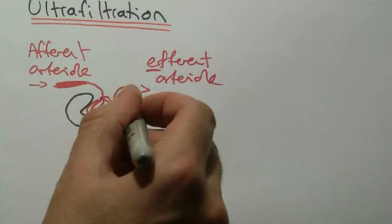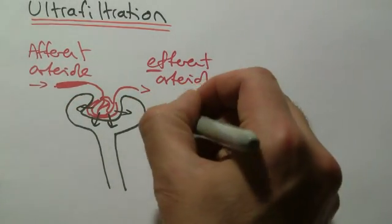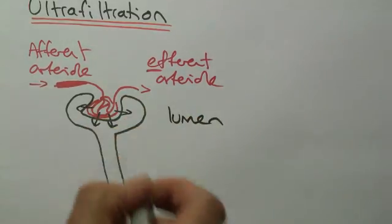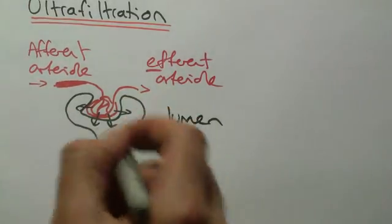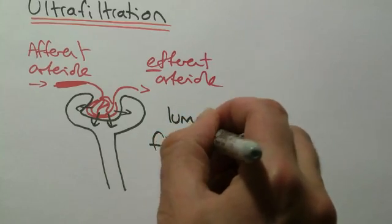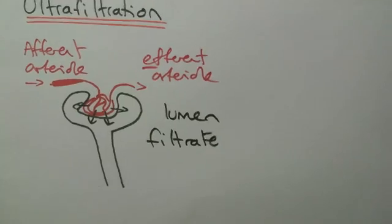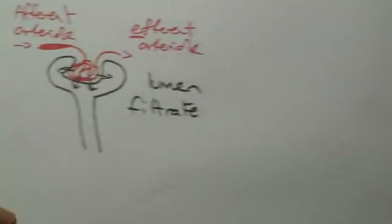Same idea here, and the fluid is forced out into the lumen, the space, of the Bowman's capsule. So another good word here to use, filtrate, which means the liquid that has been filtered through. Now, that's the basic idea of it, and there's a few mistakes that people make.